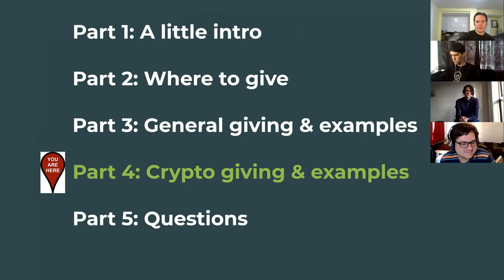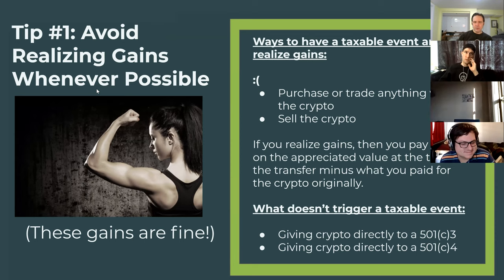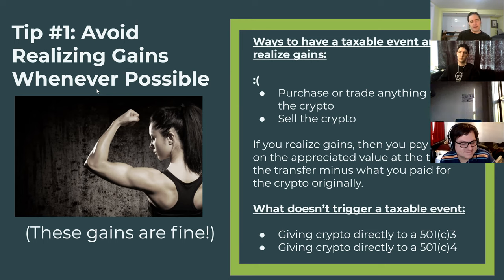Now let's talk about crypto giving. The core principle: don't realize gains — just don't do it. If you have Bitcoin, Ethereum, or some other cryptocurrency, do not sell the cryptocurrency. Also, do not purchase another cryptocurrency with crypto that's appreciated — you will also realize the gains that way. When you purchase an asset with another asset, the original asset realizes all of its gains. Don't do that — it's something more particular to cryptocurrency.